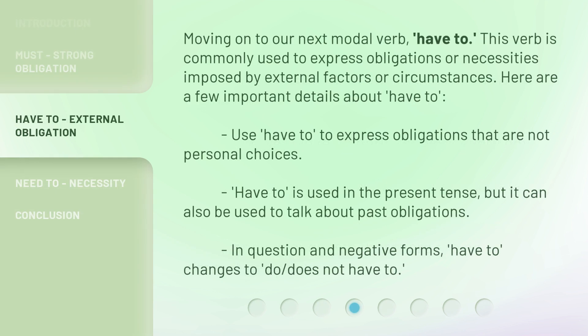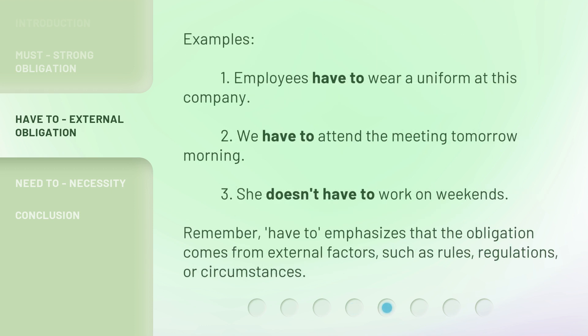Moving on to our next modal verb, 'have to.' This verb is commonly used to express obligations or necessities imposed by external factors or circumstances. Here are a few important details about 'have to': use 'have to' to express obligations that are not personal choices. 'Have to' is used in the present tense, but it can also be used to talk about past obligations. In question and negative forms, 'have to' changes to 'do' or 'does not have to.'